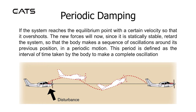Periodic damping: If the system reaches the equilibrium point with a certain velocity so that it overshoots, the new forces will, since it is statically stable, retard the system, so that the body makes a sequence of oscillations around its previous position in a periodic motion. This period is defined as the interval of time taken by the body to make a complete oscillation.